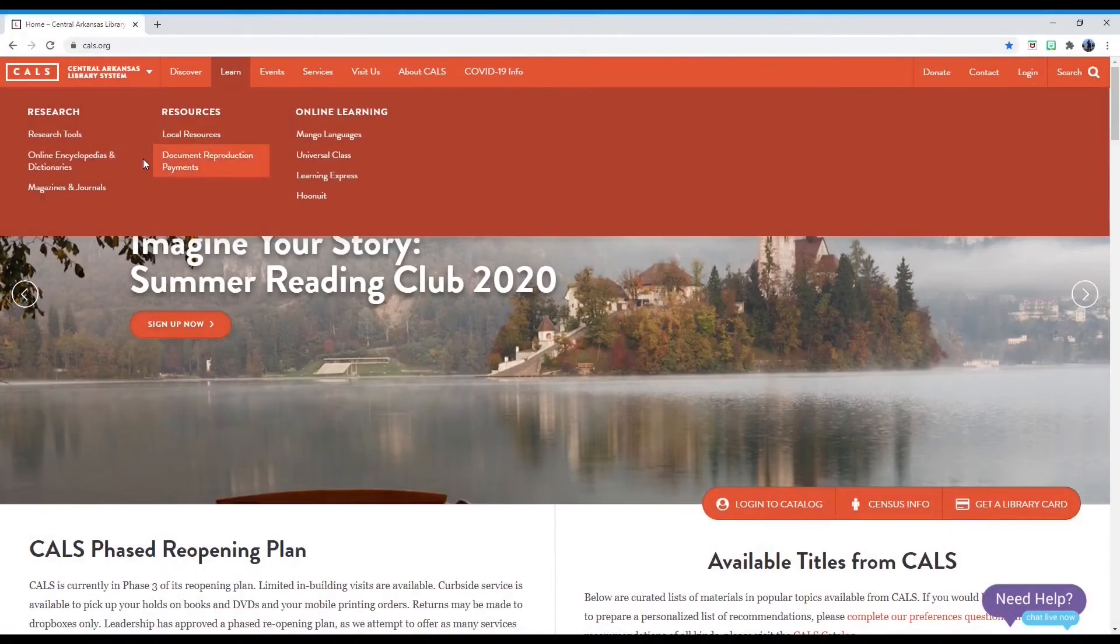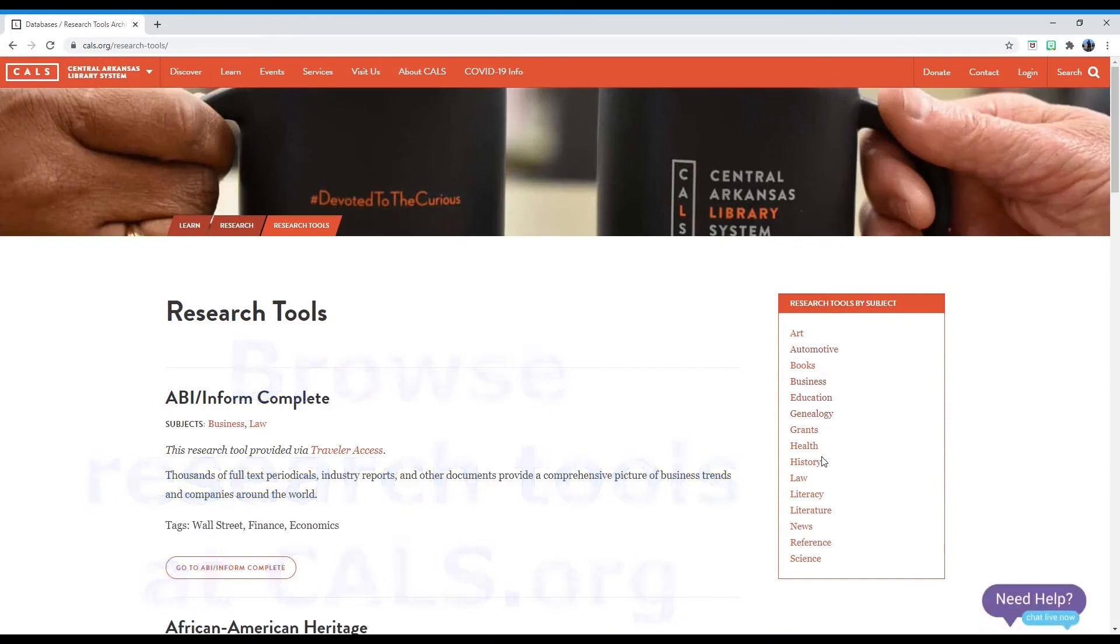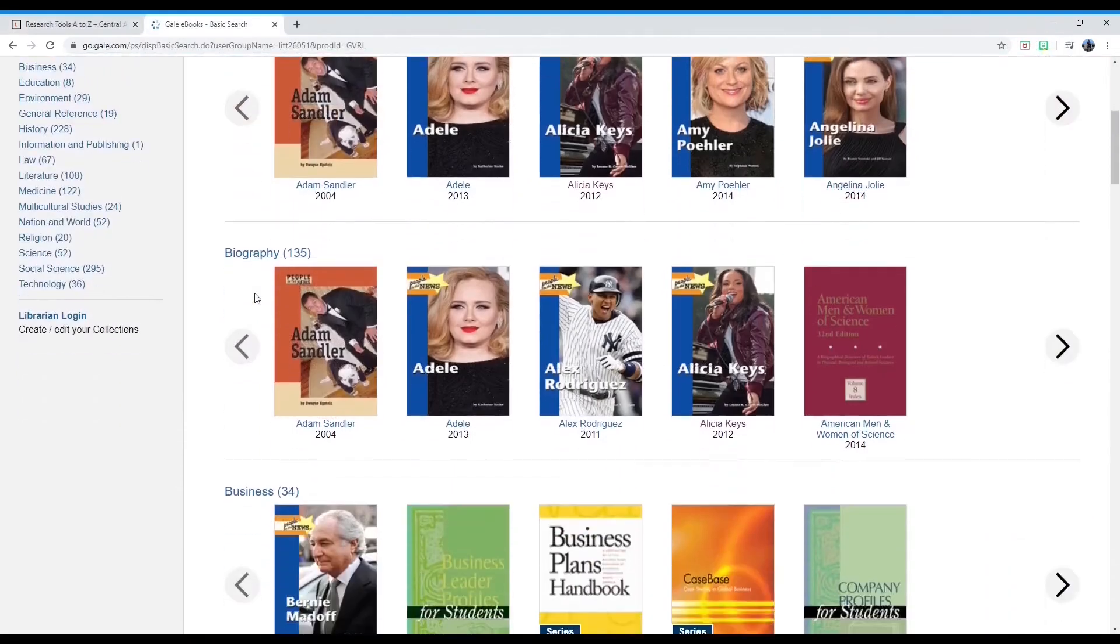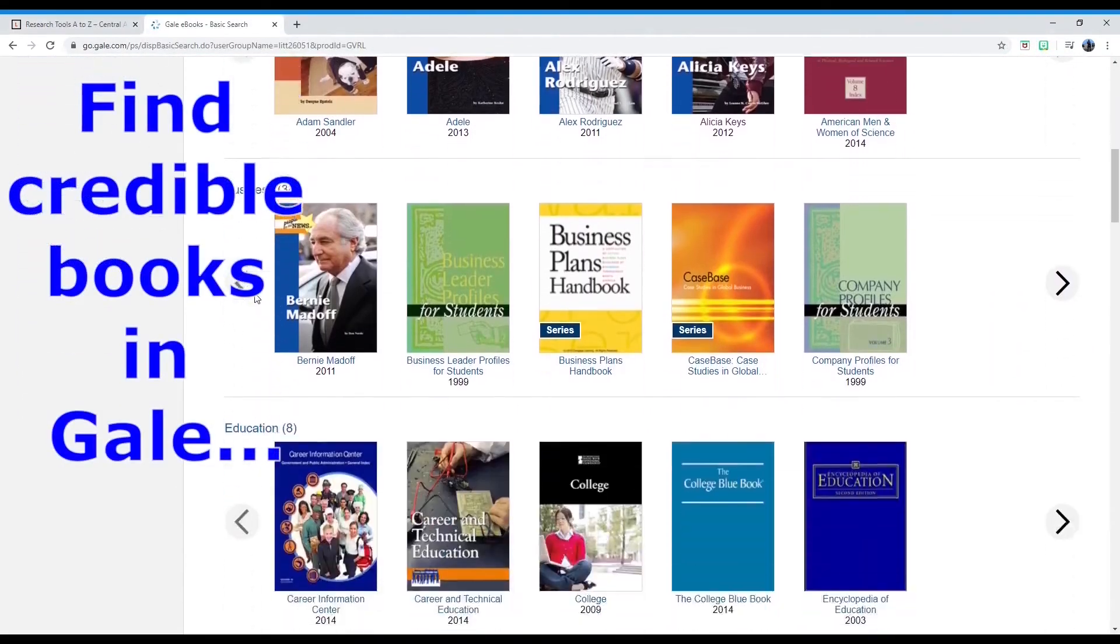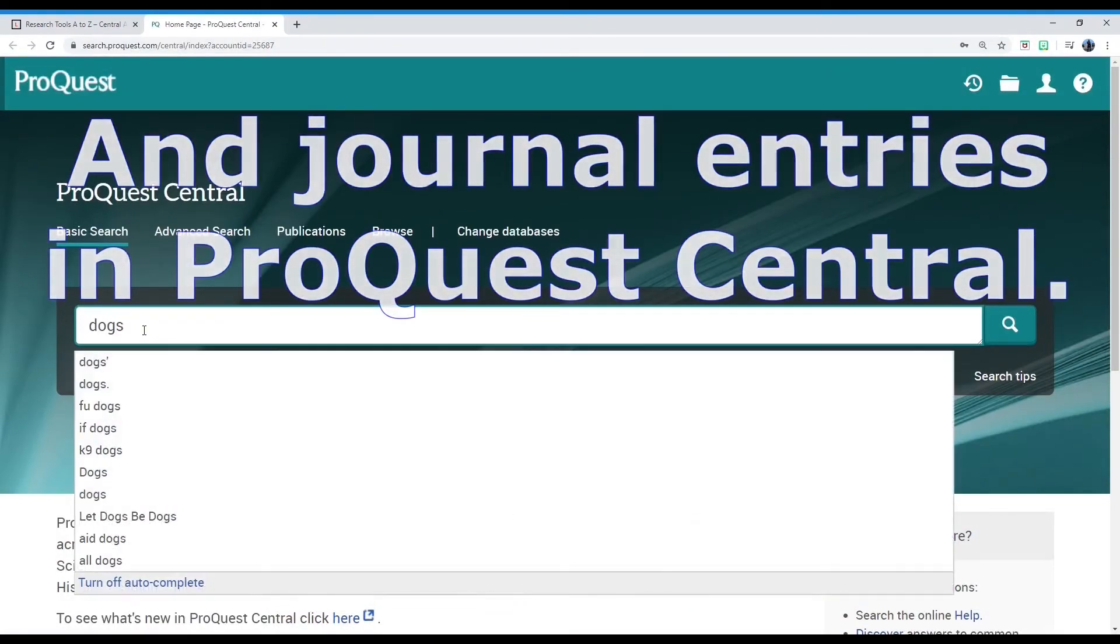The Central Arkansas Library System has a collection of databases to help you sort fact from fiction. Browse peer-reviewed books in our Gale Virtual Library and peer-reviewed journal articles in ProQuest Central. You can access our databases by visiting cals.org and exploring the Learn tab.